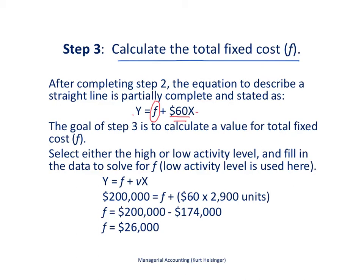And so what we are going to do is we are going to select either the high or the low activity level, either one is fine, and that comes from two slides back, and plug it in. Plug the information for that high or low activity level. I happen to use here the low activity level of $200,000 and 2,900 units. So we plug that in, Y and X, and solve for the total fixed cost.